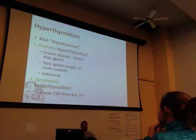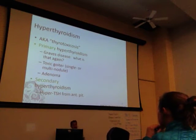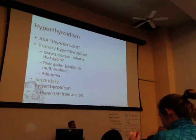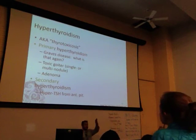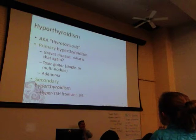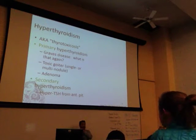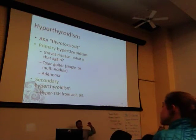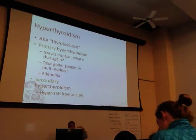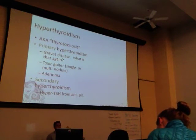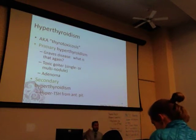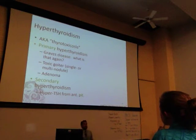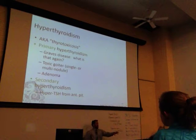Those are the primary ways you can have hyperthyroidism. A secondary way involves an axis-type mechanism — if you have excess thyroid-stimulating hormone release from the pituitary, it's really a primary pituitary issue causing a secondary thyroid issue.